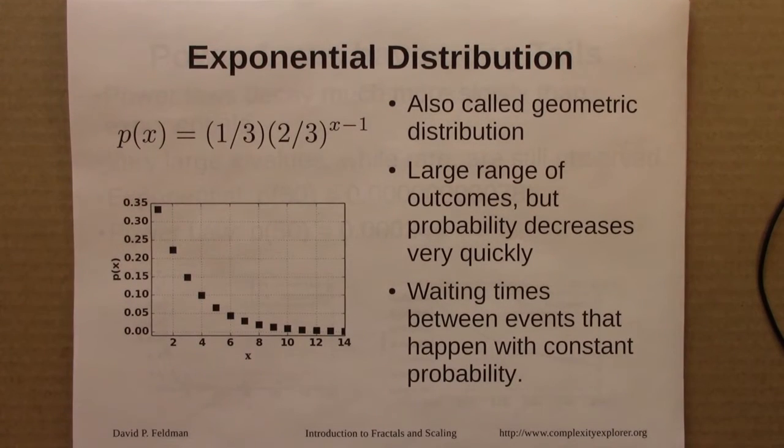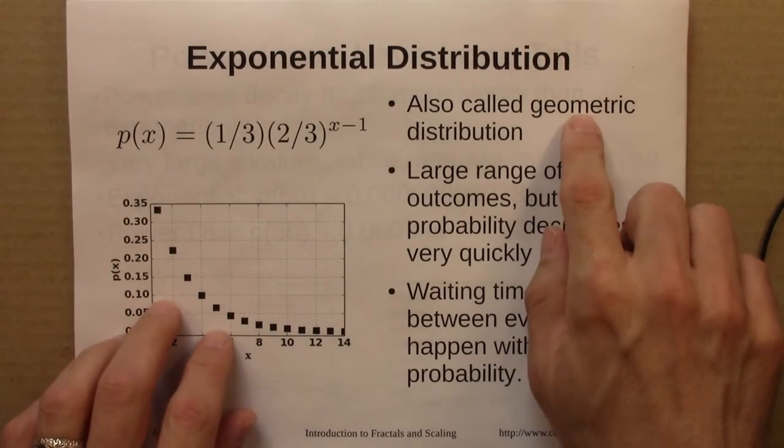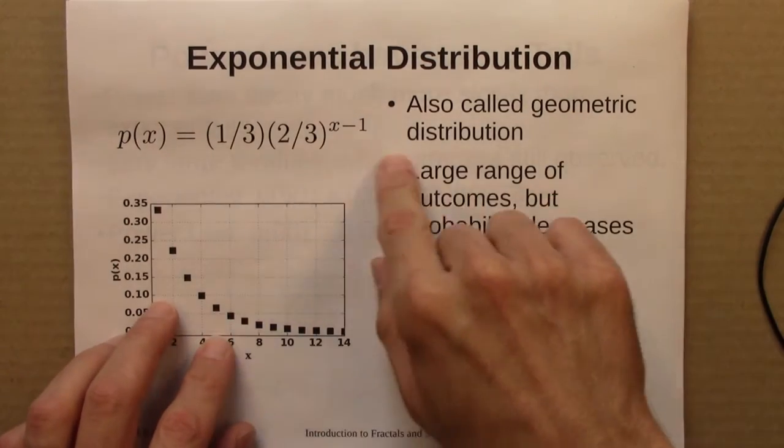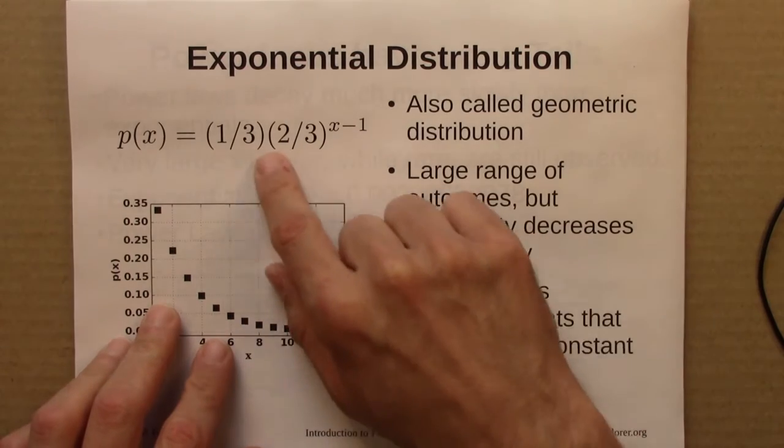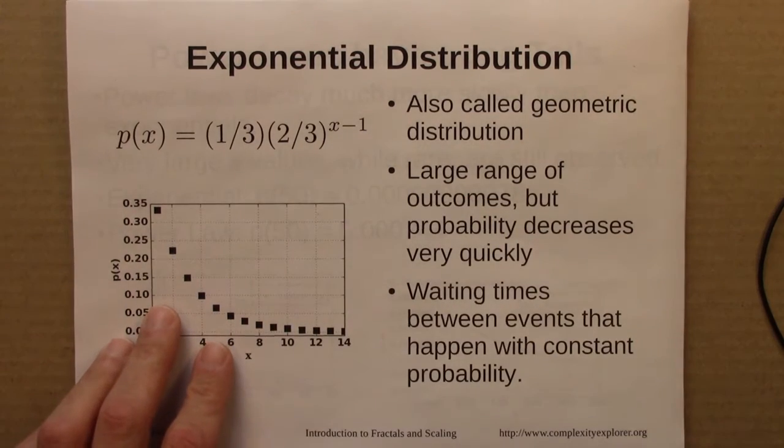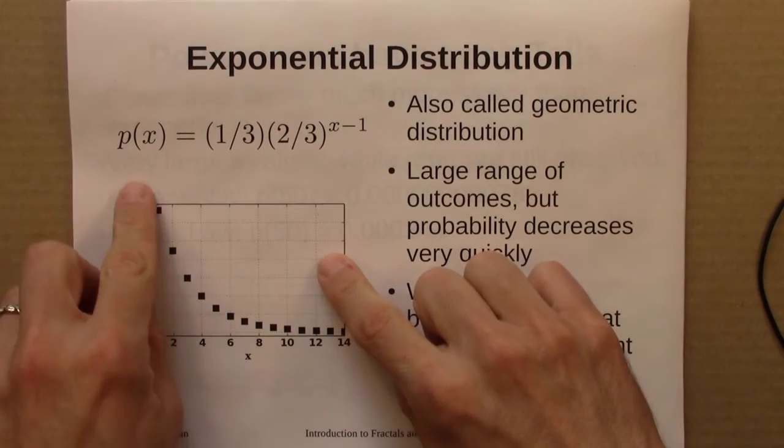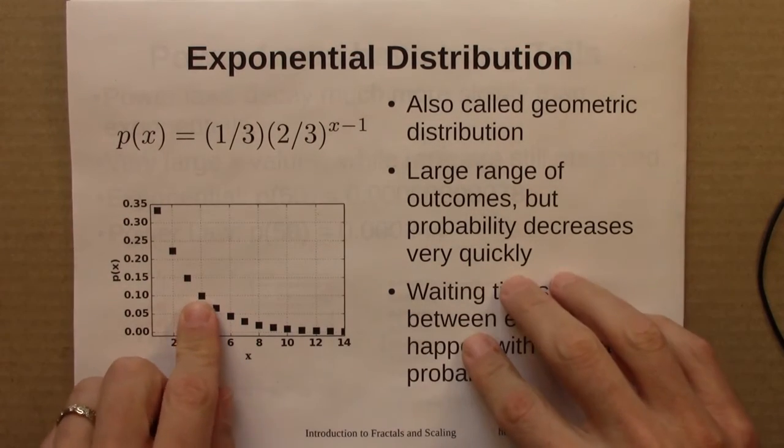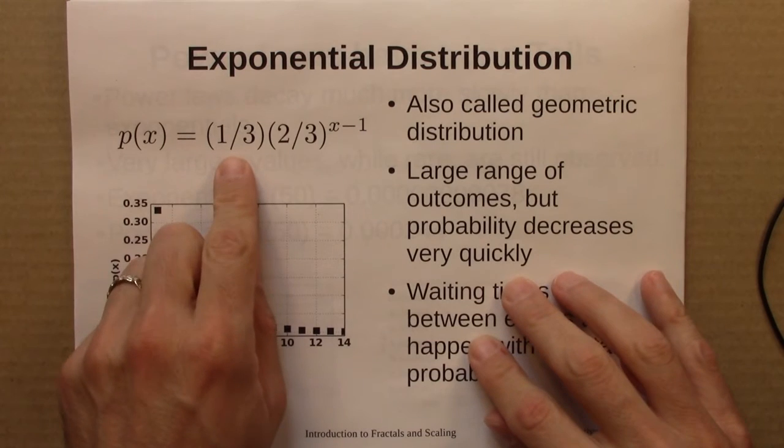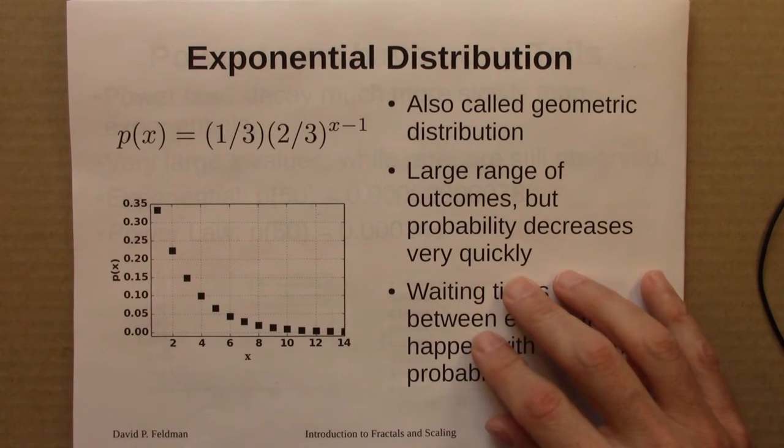Then another type of distribution that I looked at was the exponential, or sometimes called a geometric distribution. And this example was imagining how long you would have to wait for me to successfully crumple up a piece of paper and throw it in my recycling bin.